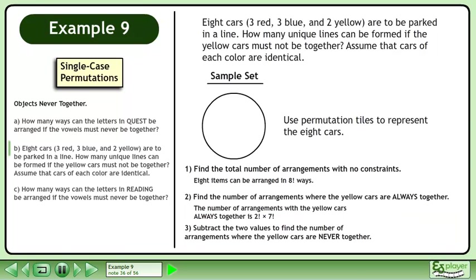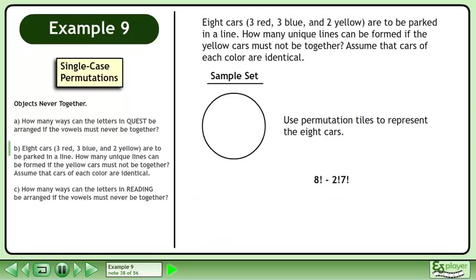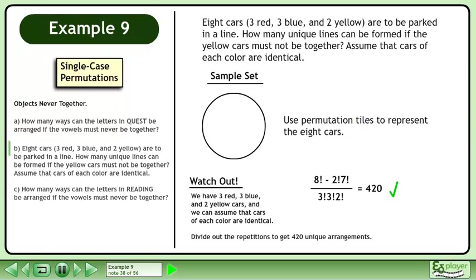The number of arrangements with the yellow cars always together is 2 factorial times 7 factorial. And finally, subtract the two values to find the number of arrangements where the yellow cars are never together, giving us 8 factorial minus 2 factorial times 7 factorial. Watch out — we have three red, three blue, and two yellow cars, and we can assume cars of each color are identical. Divide out the repetitions to get 420 unique arrangements.